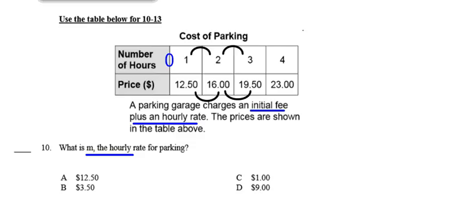On questions 10 through 13, you're using the same table for each one. Question 10: a parking garage charges an initial fee plus an hourly rate. The prices are shown in the table. What is M, the hourly rate for parking? Is it $12.50 an hour, $3.50 an hour, $1.00 an hour, or $9.00 an hour?